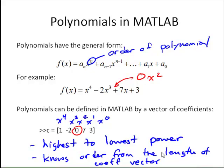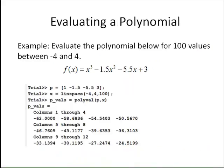Once we've defined a coefficient vector, let's look at how we can use that to evaluate a polynomial. Here's another example. We're going to evaluate this polynomial for 100 values between negative 4 and 4.